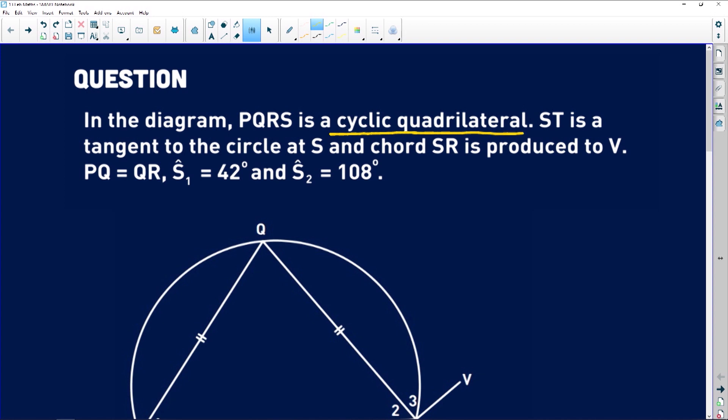Okay, guys, the moment you see cyclic quadrilateral, you should know that there are things that come with it, like the interior opposite angles add up to 180 degrees. They are supplementary. Second thing you should remember is that the exterior angle of a cyclic quad is equal to the interior opposite angle.